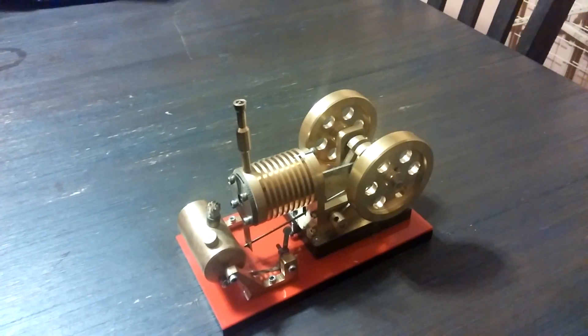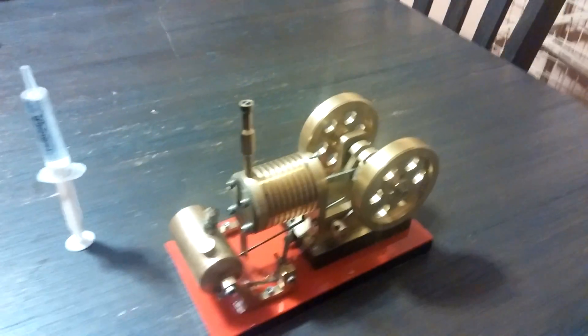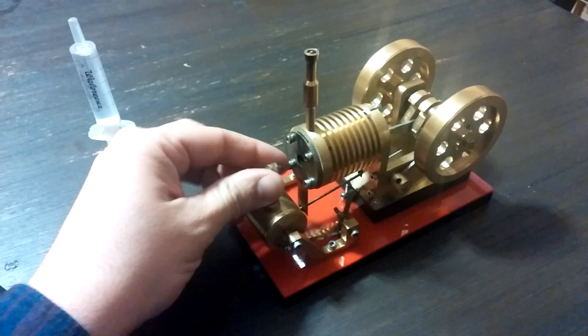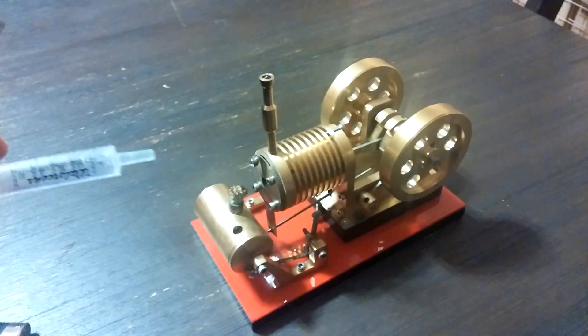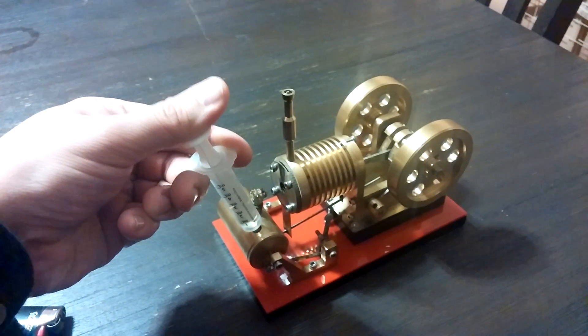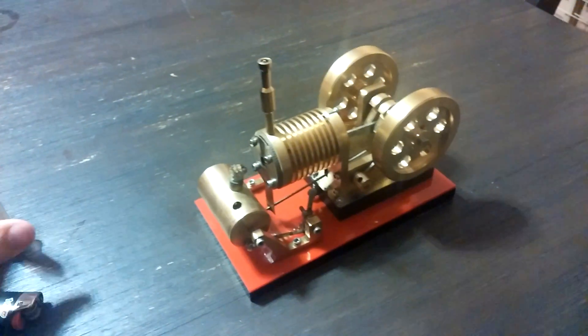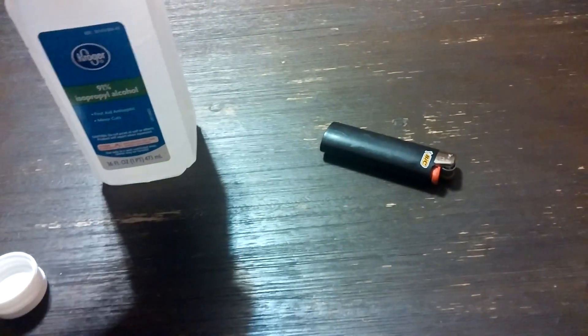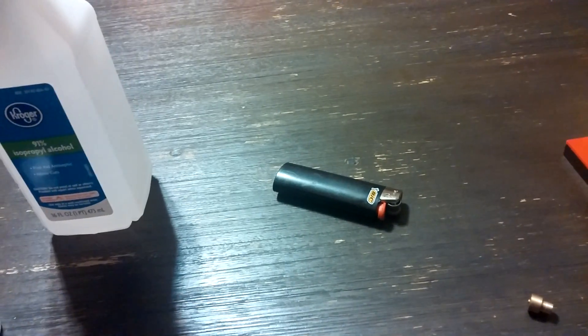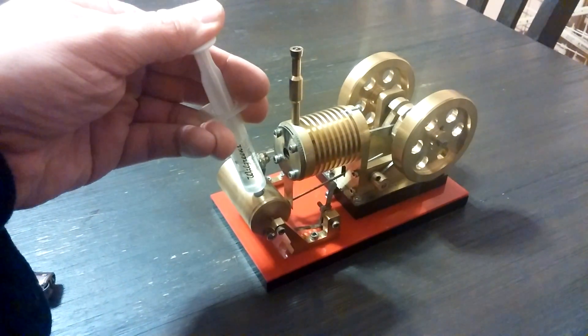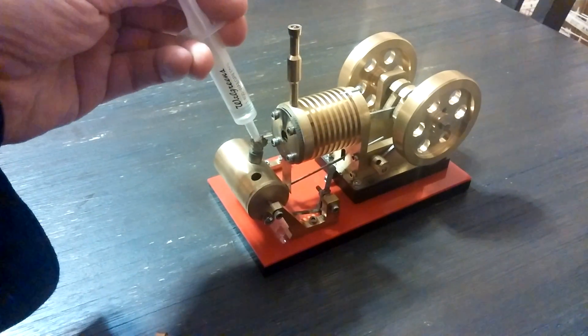Alright, I'm gonna do a cold start on my flame eater engine. Everything is cold and dry. I use 91% rubbing alcohol and squirt a little bit on the wick.